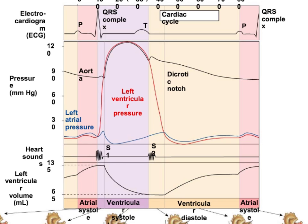You might wonder why I never mentioned atrial repolarization on the EKG — atrial repolarization is actually hidden in the QRS complex. If you're able to understand Wigger's diagram and walk through it step by step — labeling what's occurring at each segment and each spot on the EKG and pressure curves, including the heart sounds — you'll have proven a solid understanding of the material covered on pages 489 through 499.